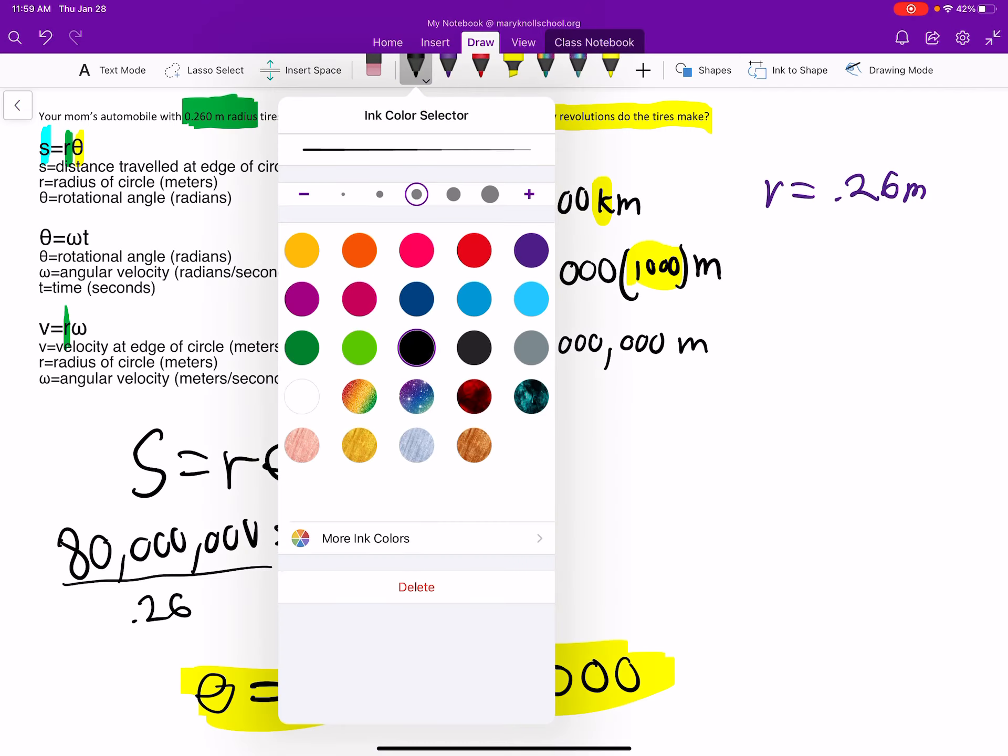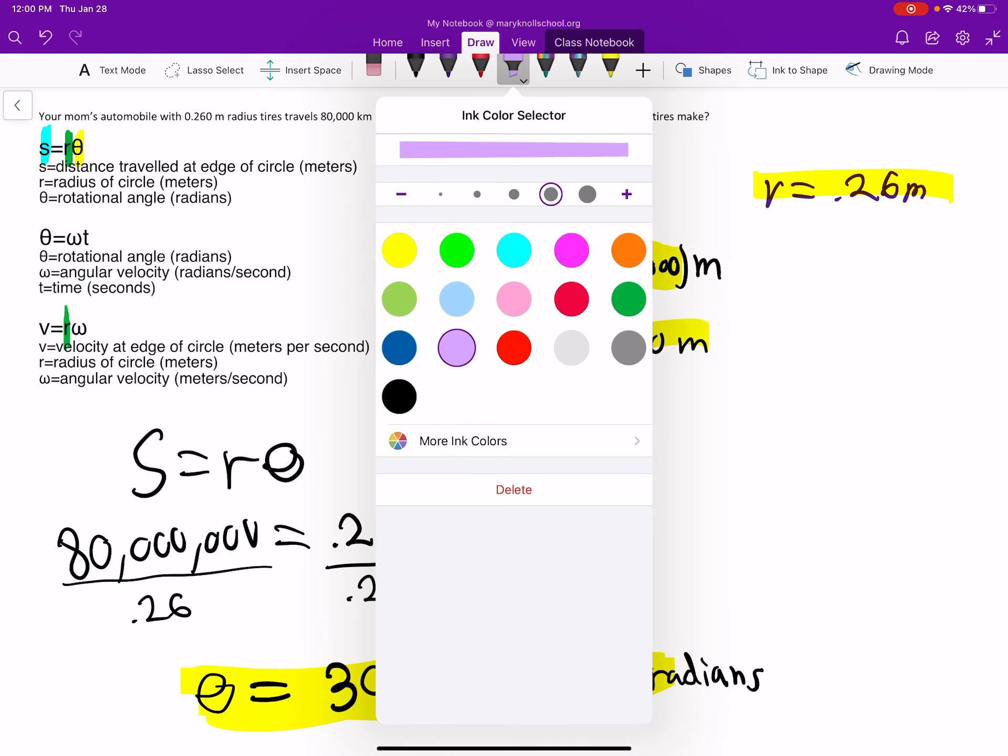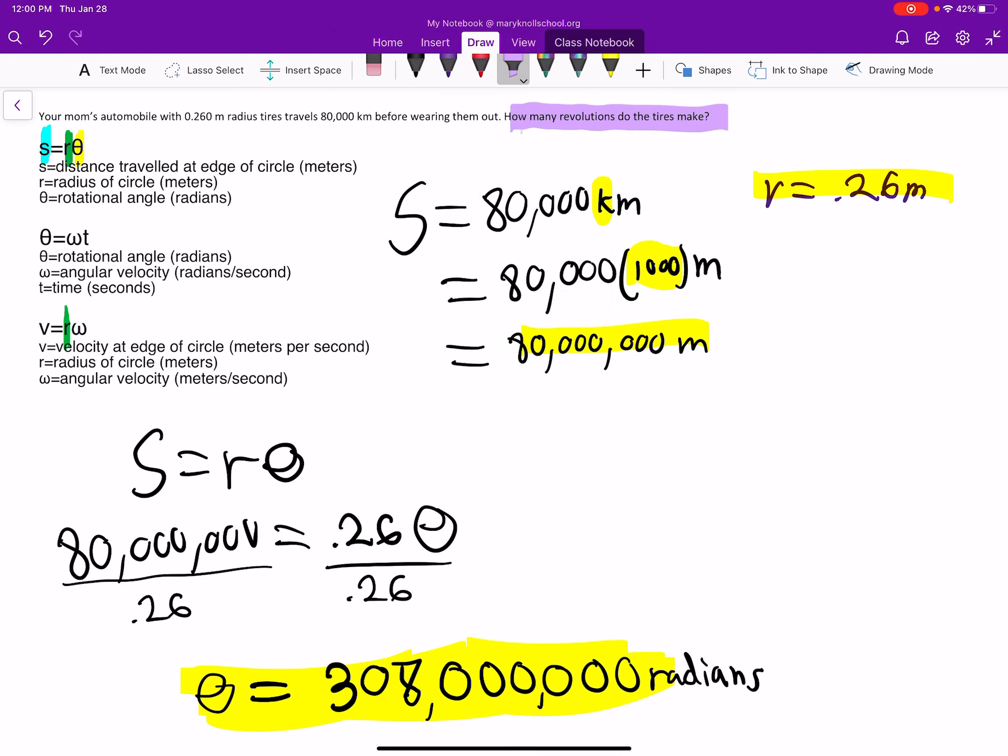Now we are in SI units. We use nothing but SI units to plug into this. We use meters and meters. So what we're going to get out is also SI units. So that's going to be in radians. Now let's read that question one more time. And we can see the question is asking how many revolutions, not how many radians, but how many revolutions do the tires make?